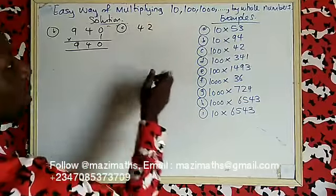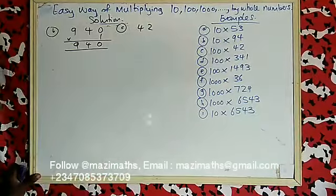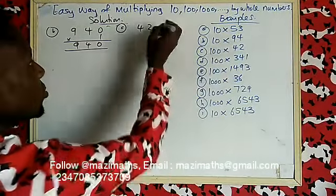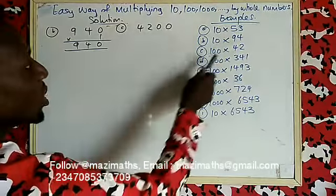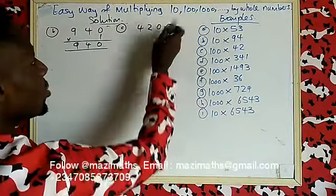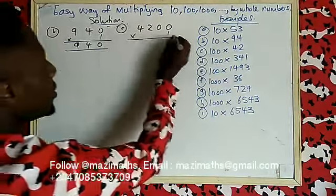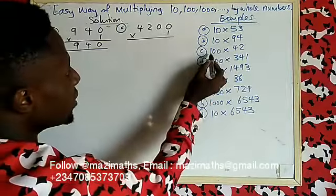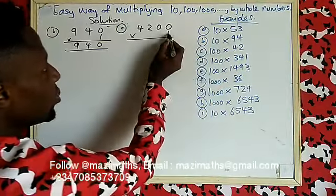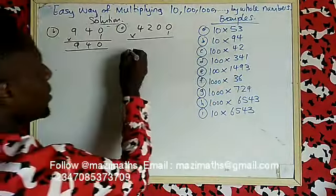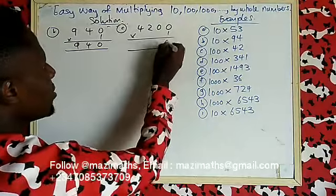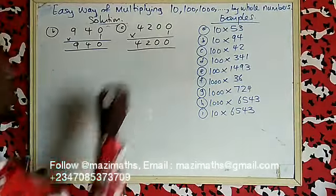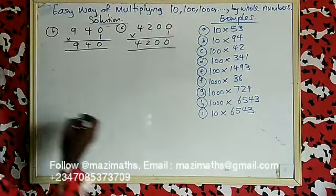Next: 100 times 42. Write 42 first. How many zeros are in 100? Two zeros — put those two zeros here. If it were 200, you would put two plus the extra digit. For 100: one times two is two, one times four is four. Your answer is 4200.